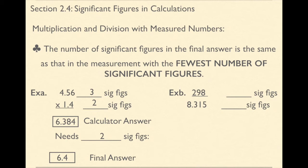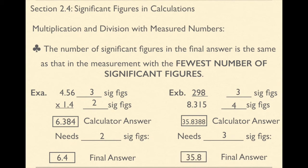For example B, 298 has three sig figs, 8.315 has four sig figs. And so when I divide, I end up getting 35.8388 and it continues on. Well, since 298 has three sig figs, that's how many sig figs I need. And so as a result, I'm going to round this to 35.8 because that has three significant figures.